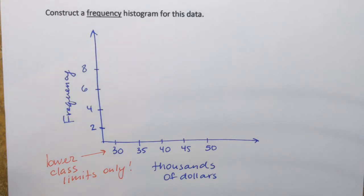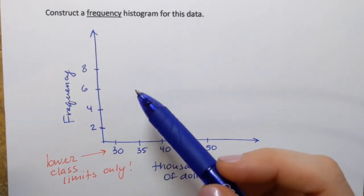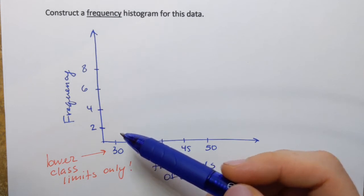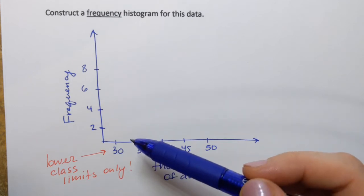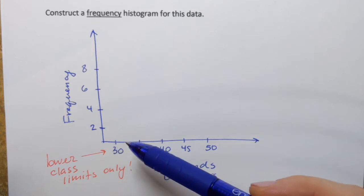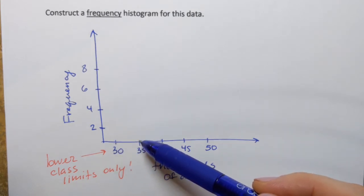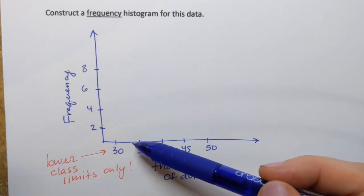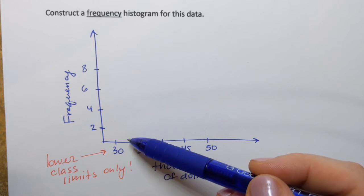So once you set up each axis it's time to construct the histogram itself. So a histogram consists of the vertical bars that have same width and that width is exactly the class width. So the bars will fit in between the lower class limits and the height of each bar corresponds to the frequency.